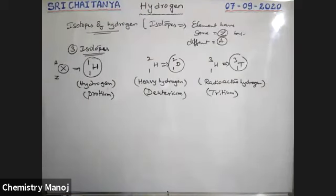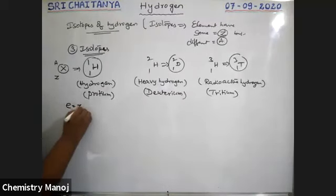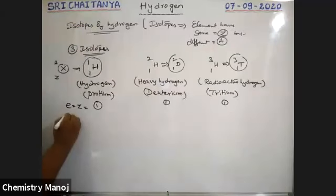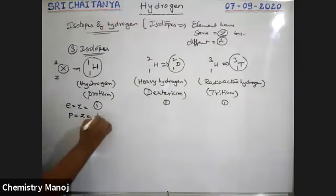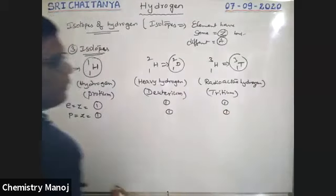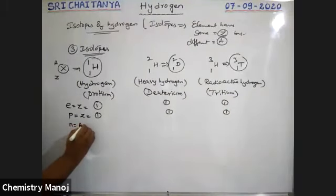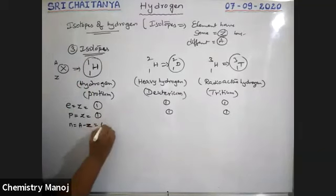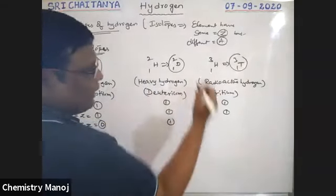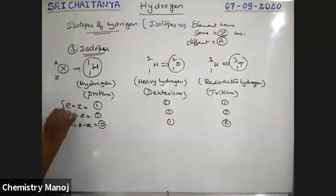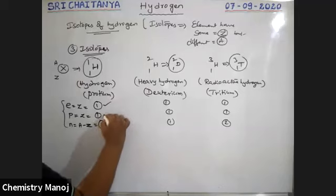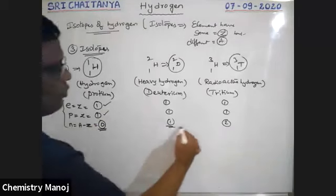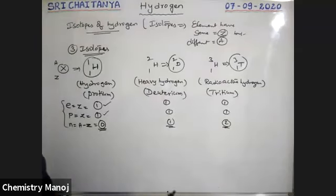For ₁H¹: electrons = 1, protons = 1, neutrons = A−Z = 1−1 = 0. For ₁H² (deuterium): electrons = 1, protons = 1, neutrons = 2−1 = 1. For ₁H³ (tritium): electrons = 1, protons = 1, neutrons = 3−1 = 2. All these isotopes have the same number of electrons and protons but different numbers of neutrons. Isotopes differ by the number of neutrons.